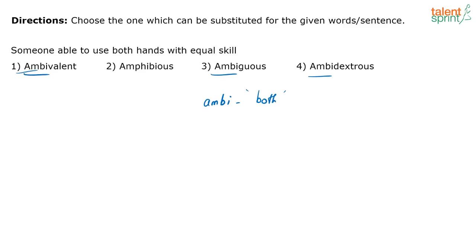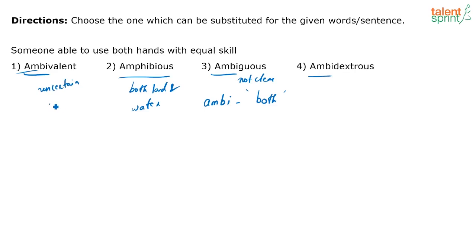Amphibious, we might be familiar with — someone able to live both on land and water, like a crocodile. Ambiguous means something that is not clear. That leaves us with ambivalent and ambidextrous. Ambivalent means uncertain or unsure about something — indecisive. For example, if I've already applied for SBA and I'm not sure whether to do SSE CGL, I'm ambivalent about applying — I'm uncertain, I'm not able to decide.